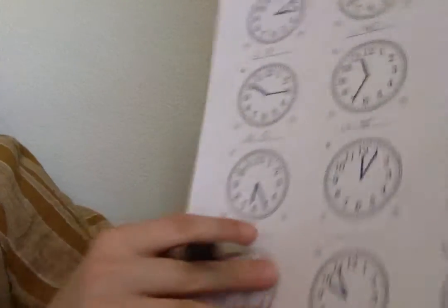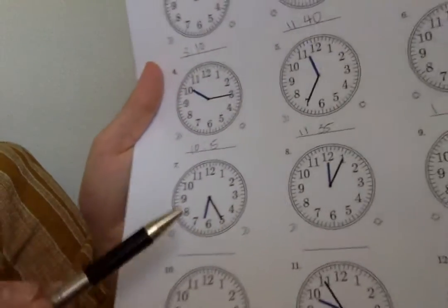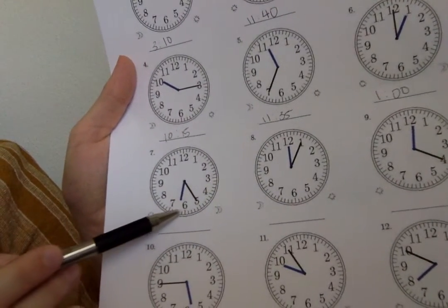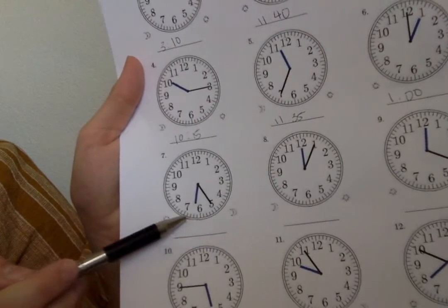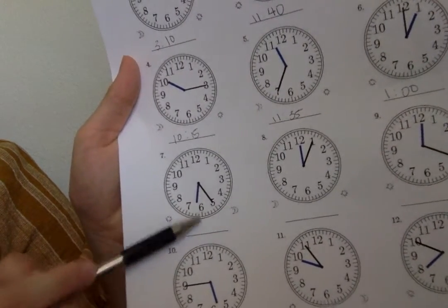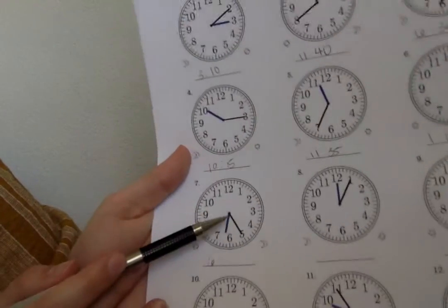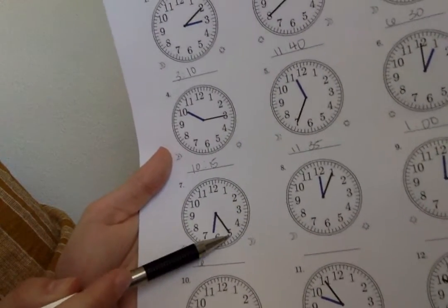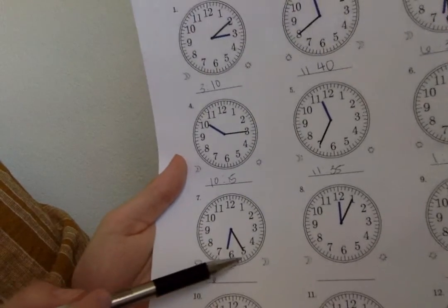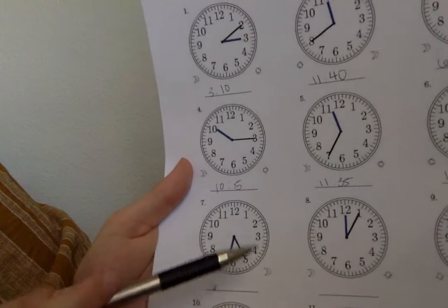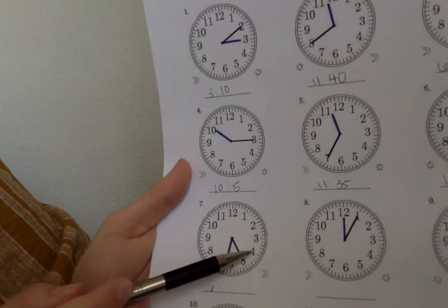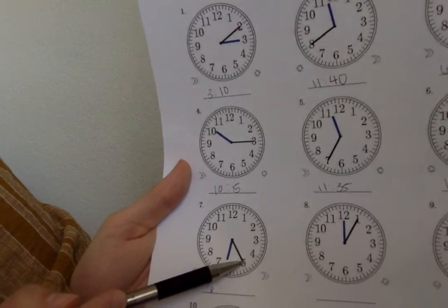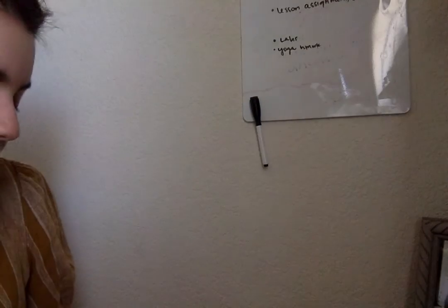We're gonna go to the next clock. We're gonna look for that short hand or blue hand, and we see it's a little bit past the six but it's still before the seven. So we know our hour is gonna be six. We start by writing six. Then we go to the black hand — the minute hand — and we see it's on the five. Counting: five, ten, fifteen, twenty, twenty-five. Since it's on five, it's gonna be twenty-five. So we have 6:25.